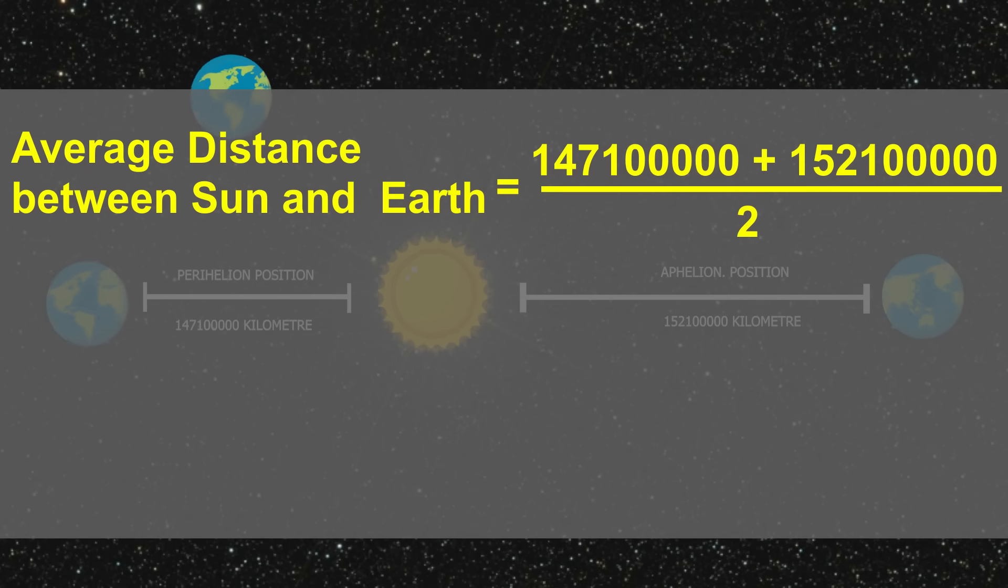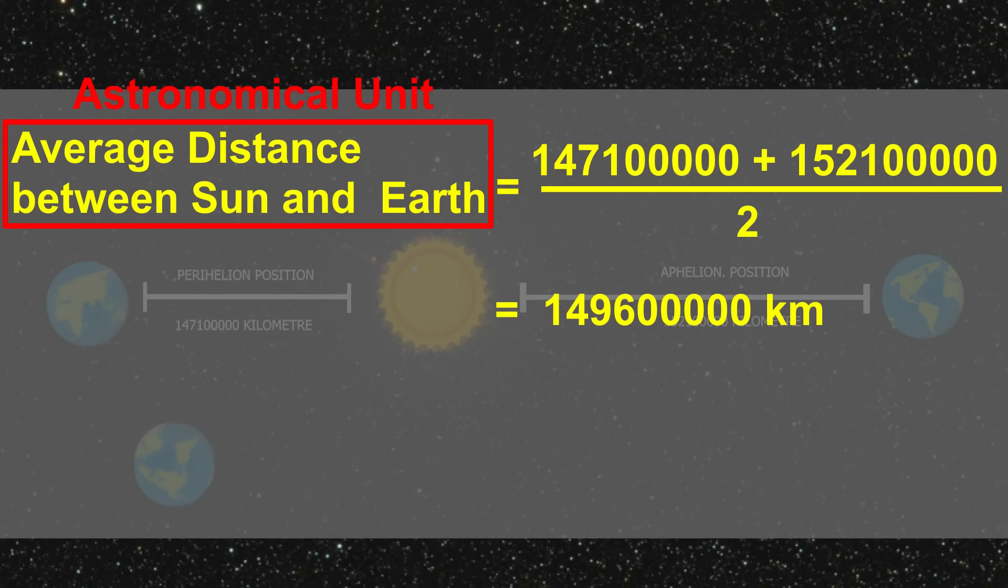Averaged distance between Earth and Sun can be found by taking average of distance at Aphelion and Perihelion positions, which comes out to be 14 crore 96 lakh km. This distance is called Astronomical Unit. In short, it is represented as AU. 1 AU equals 14 crore 96 lakh km.